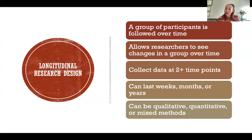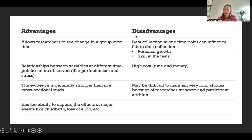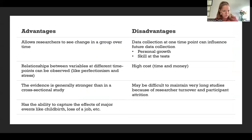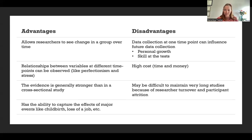Longitudinal research can be qualitative, quantitative, or mixed methods. Some advantages: researchers can see how that group changes over time. For example, we could see what personality traits students exhibit in kindergarten and how those relate to their profession in adulthood or their success in higher education. So you can see relationships between variables at different time points.